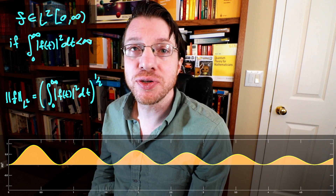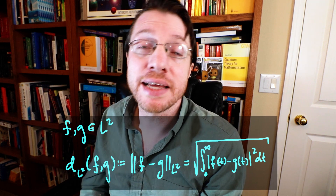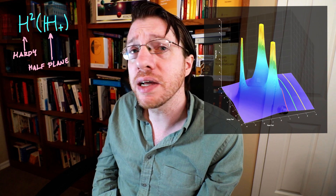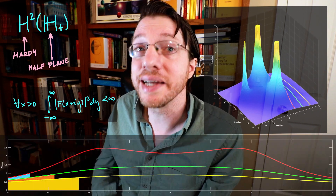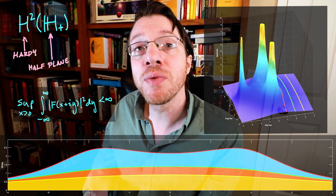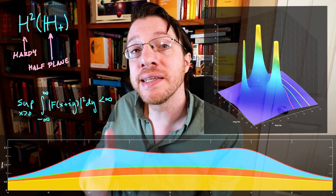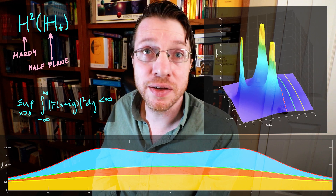It turns out that norms give rise to metrics. If I take two signals f and g, take their difference, and look at the norm of that difference, that gives me a proper metric on L2. Then we have a space of analytic functions — the Hardy space of the half plane. This consists of those analytic functions where, if you take a line parallel to the imaginary axis, square the magnitude of the function along that line and integrate, the integral remains bounded. Taking the supremum over all such integrals defines a norm on that space, giving us a metric for the Hardy space.